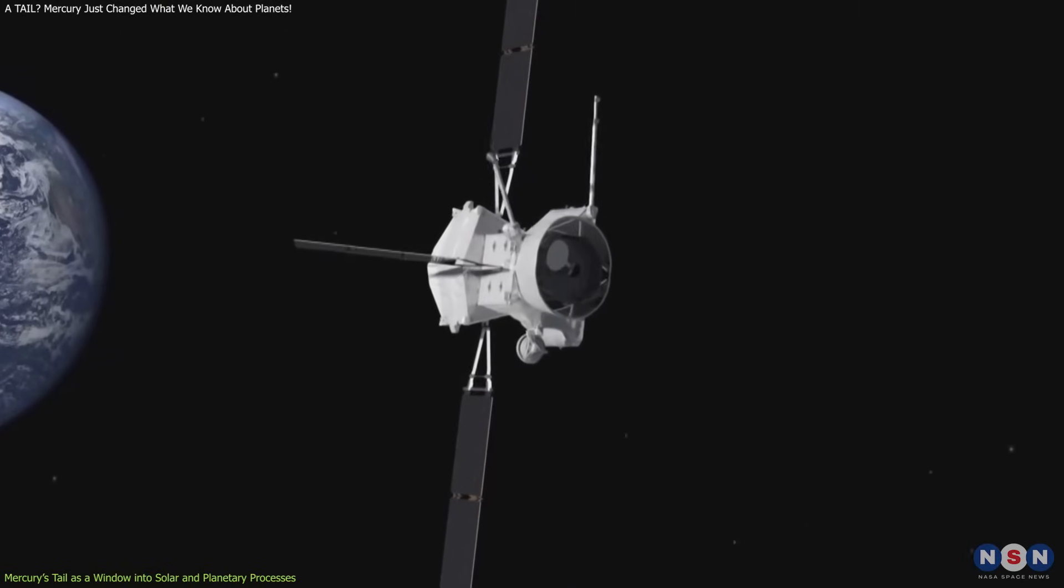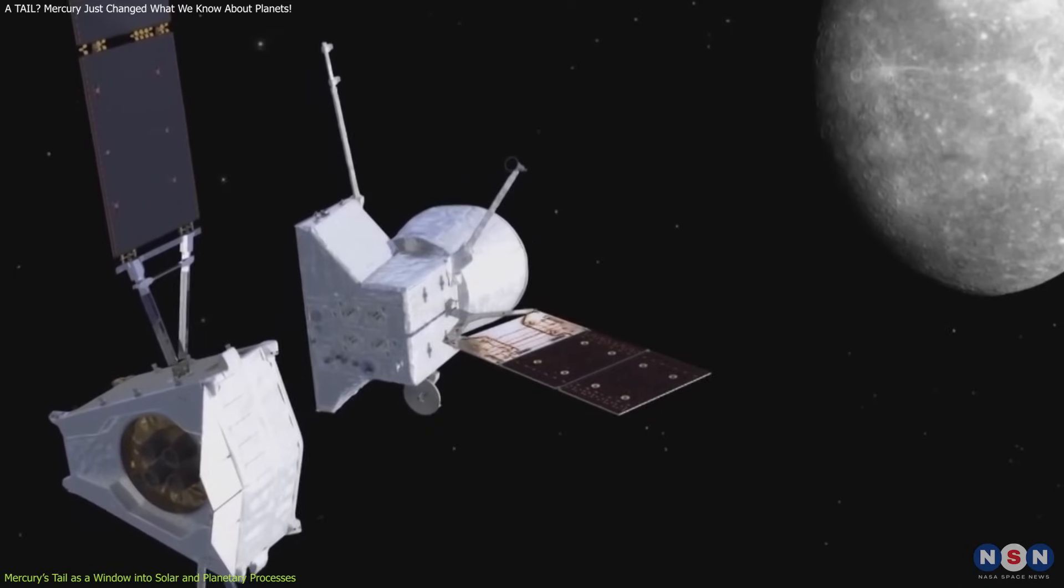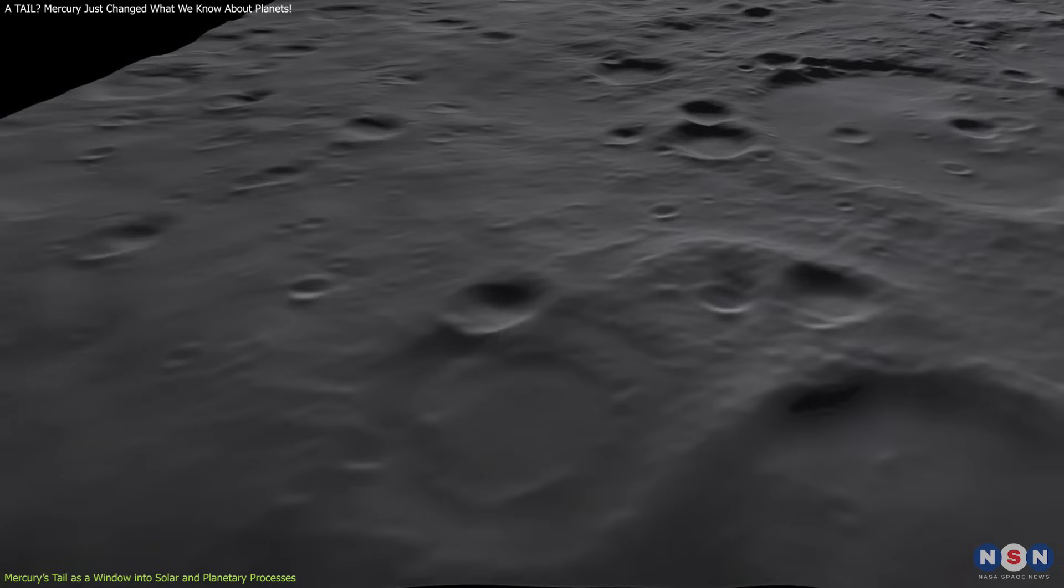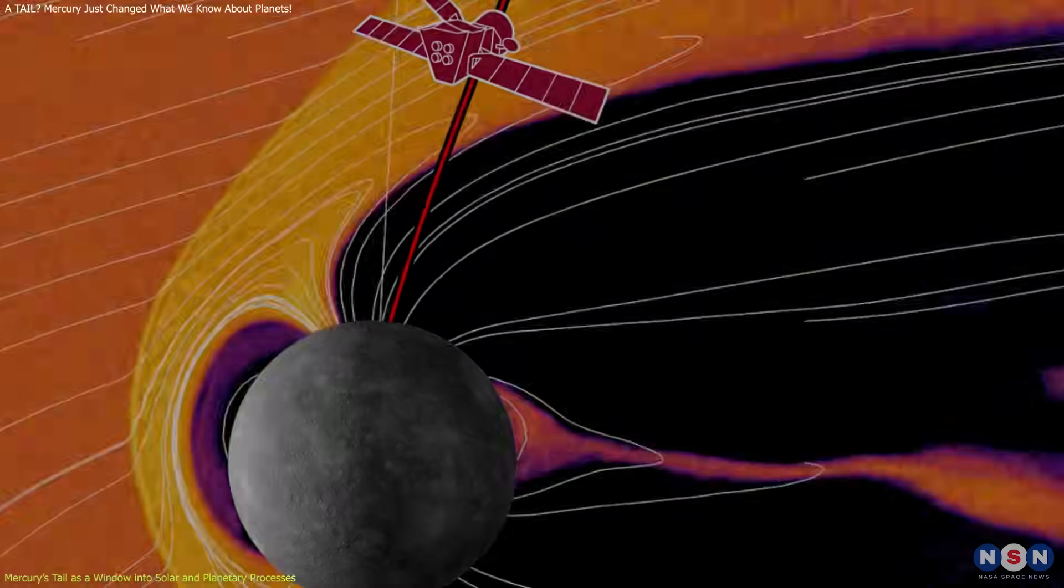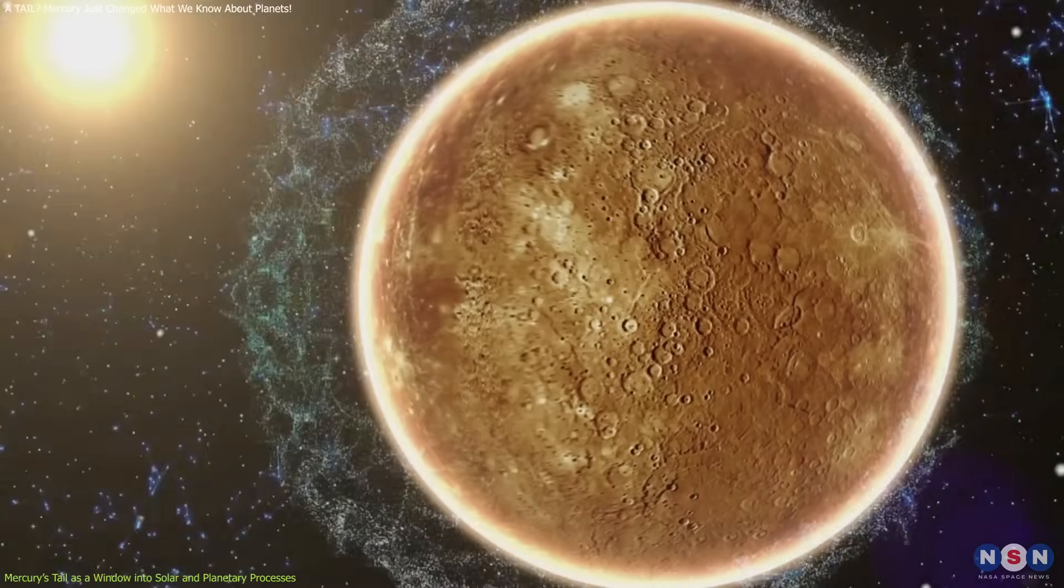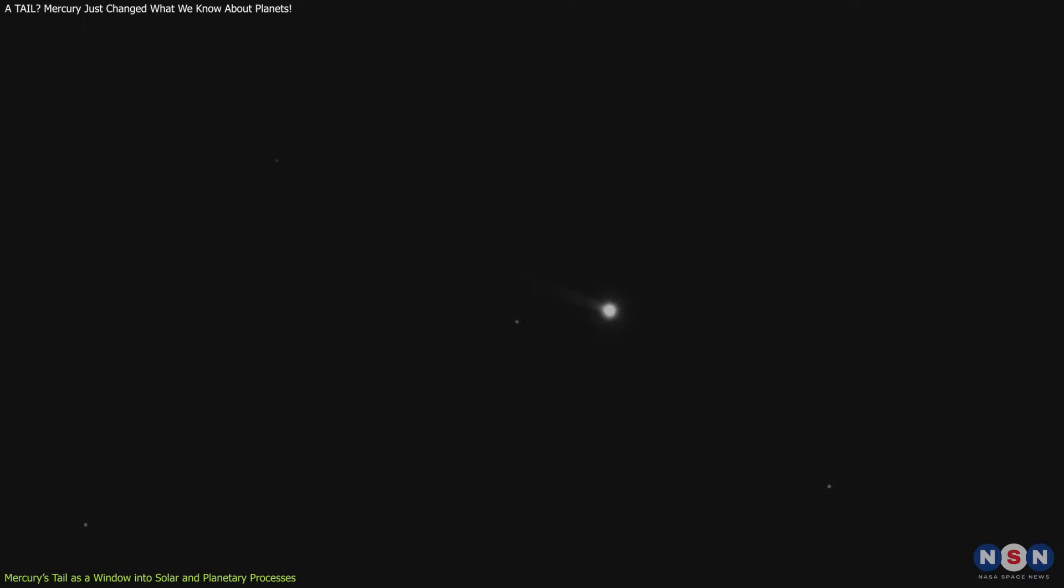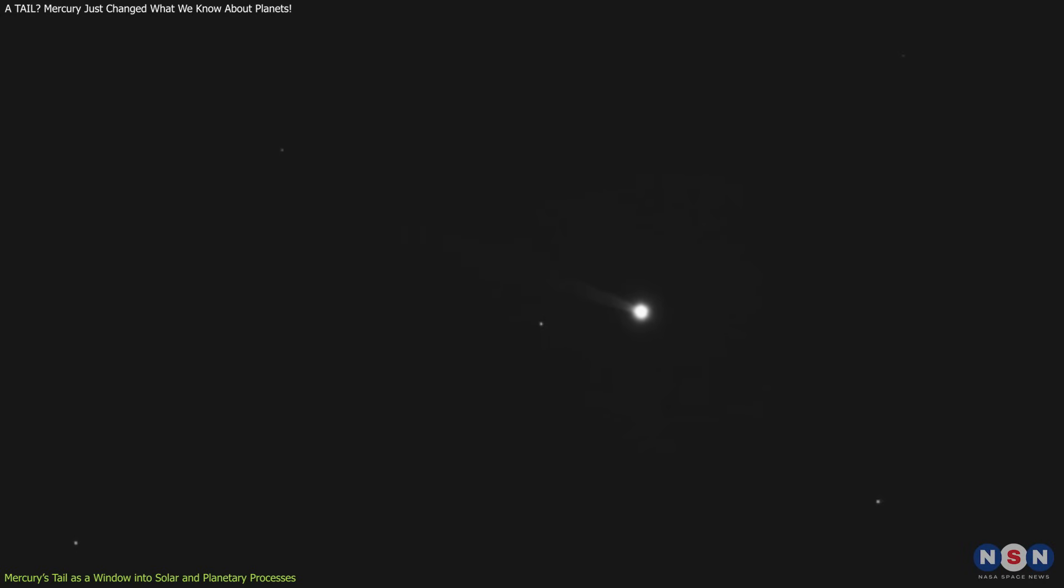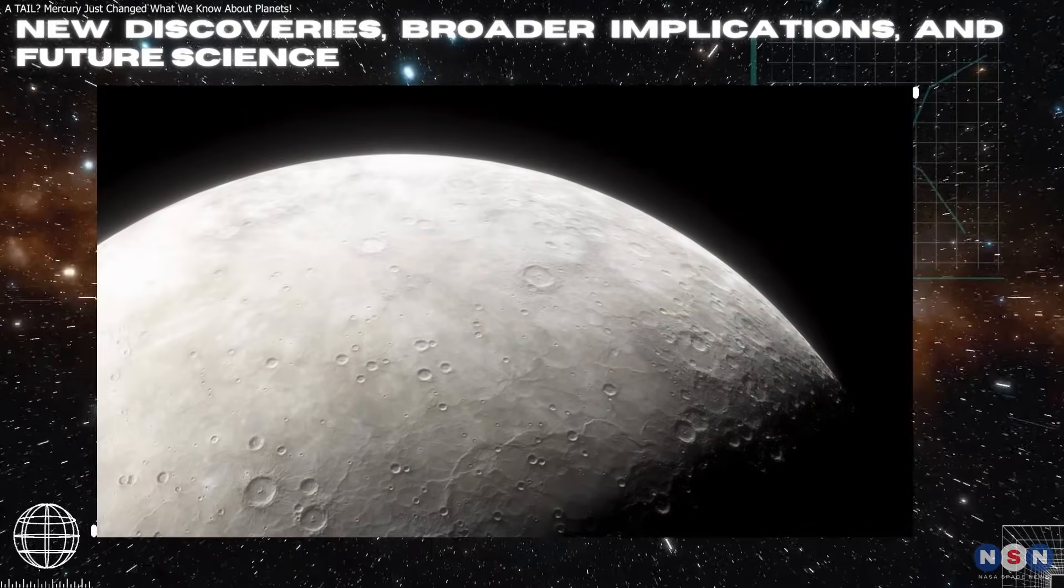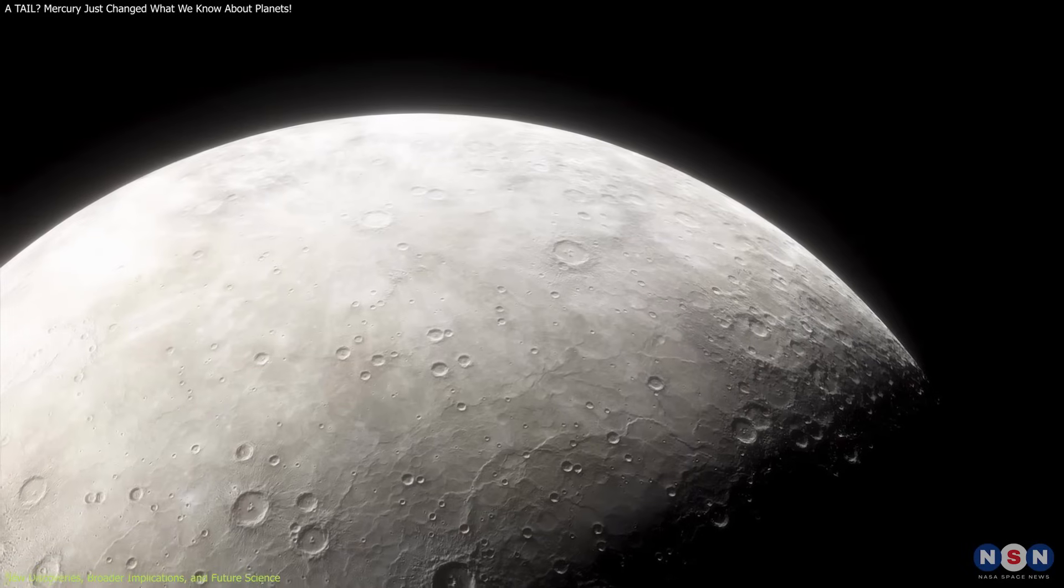The European-Japanese BepiColombo mission is currently on its way to Mercury, set to arrive in 2026. It carries two orbiters packed with sensors specifically designed to study the planet's surface, magnetic field, and exosphere in unprecedented detail. This includes instruments focused on detecting and analyzing sodium emissions, which will provide scientists with the clearest picture of how Mercury's tail forms and evolves.